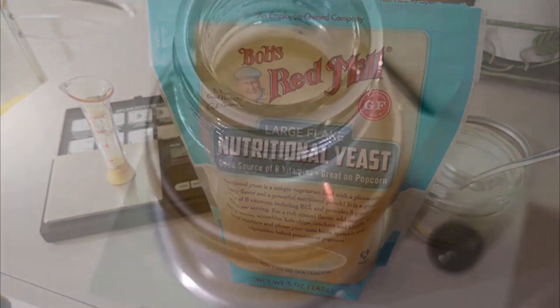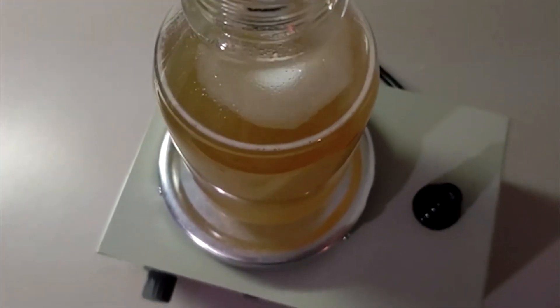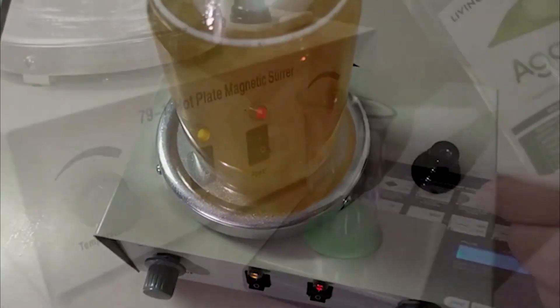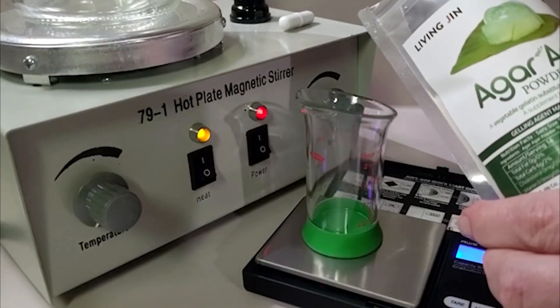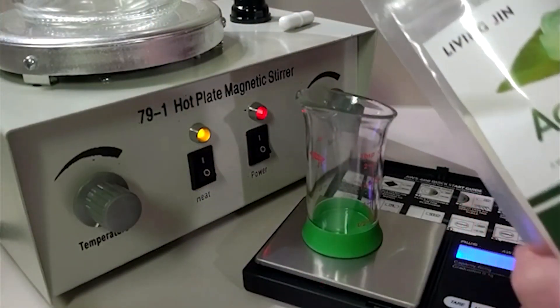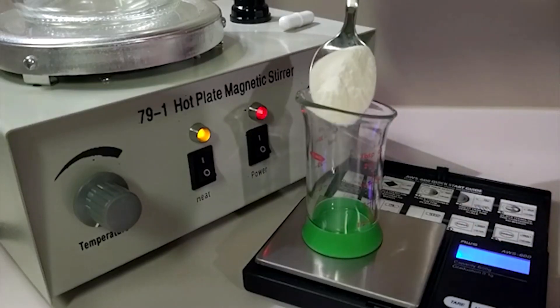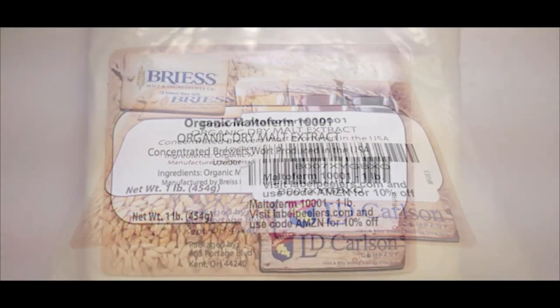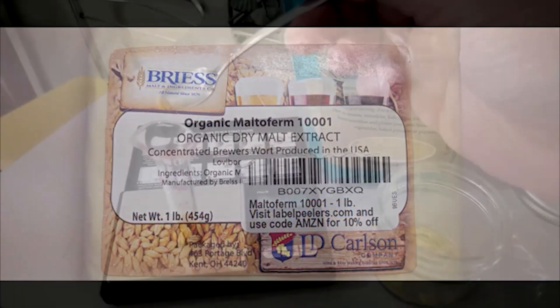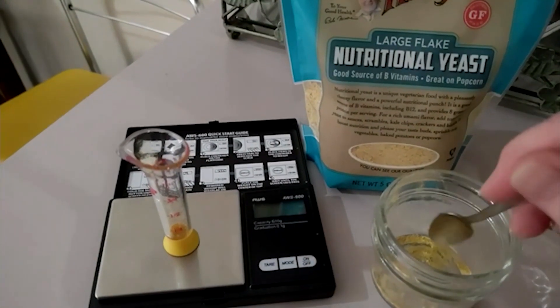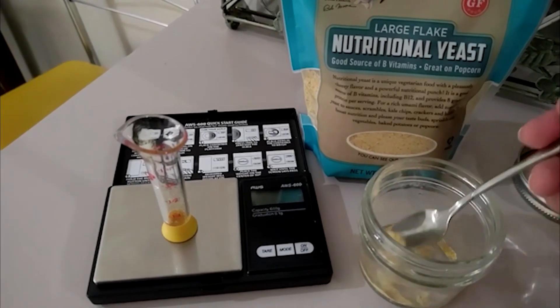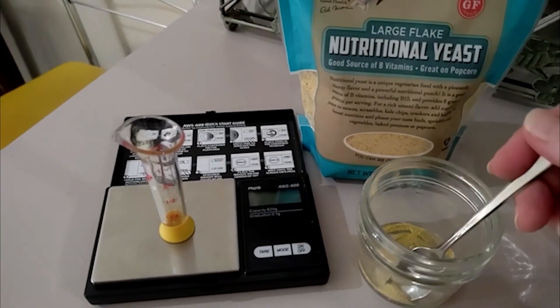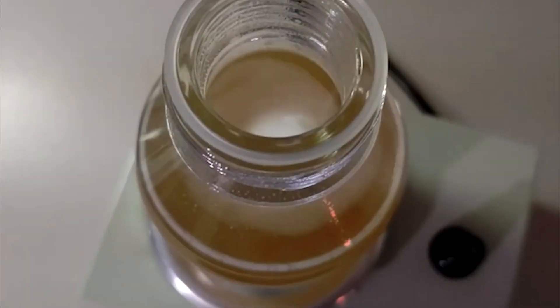We experimented with many different recipes and really feel we've perfected this one. When creating 500 milliliters of agar, you want to use 10 grams of agar, 7.5 grams of malt extract, and 0.25 grams of nutritional yeast—yes, 0.25 grams of nutritional yeast to create 500 milliliters.